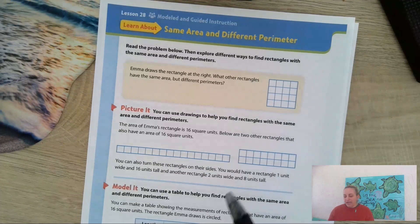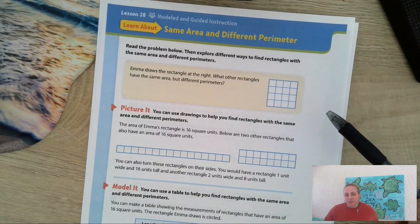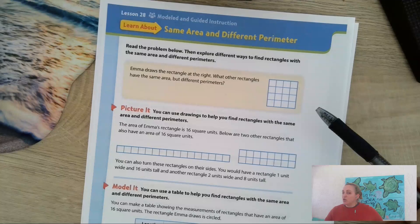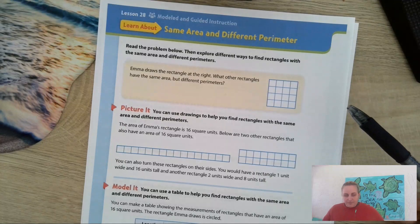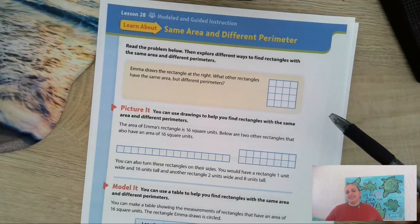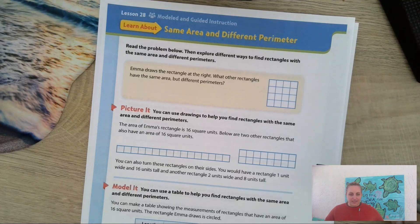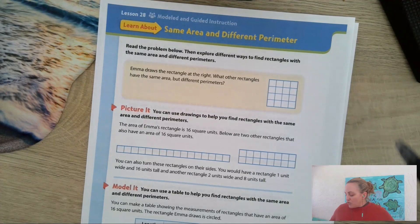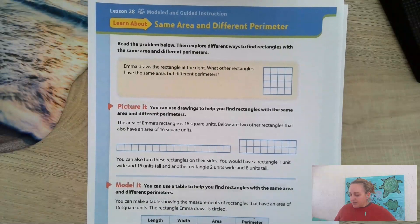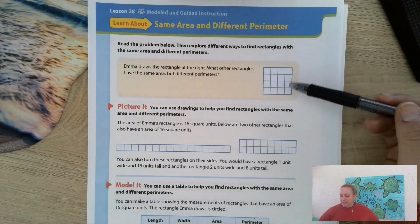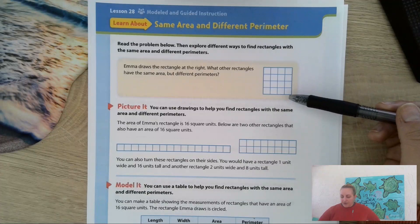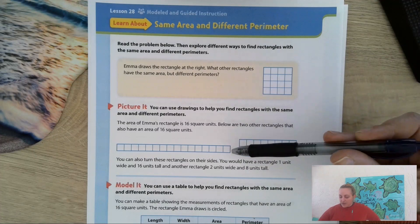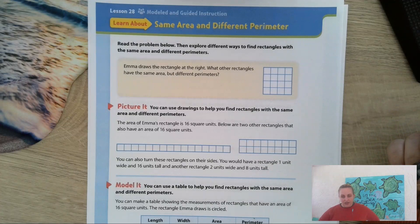So when we are looking at the same area and different perimeter, we want to think how can we use the same number of squares to still make a rectangle, but have the sides add together differently to come up with a different perimeter. That's what it's saying. So we can draw pictures to help us out. You guys can see right here, here's an example. So we have, this one has an area of 16.